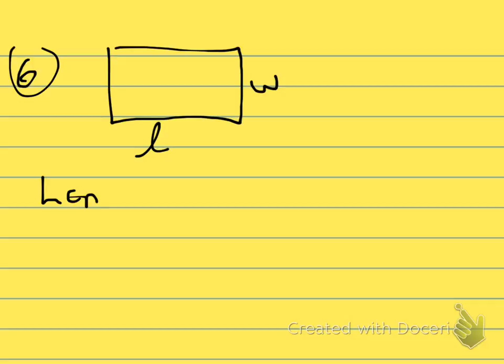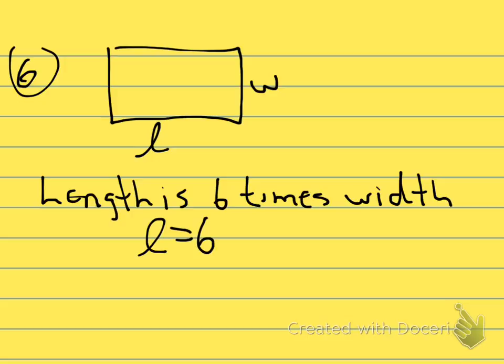On problem number six, we have a rectangle. It has a length and a width, however you want to label those two. And they tell us the length is 6 times the width. Using our variables, that would be that L equals 6W.